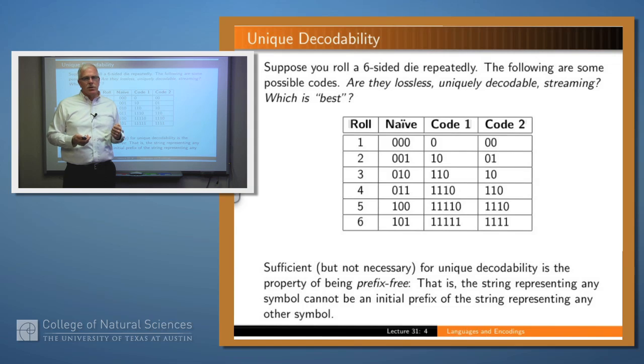A sufficient but not necessary condition for unique decodability is the property of being prefix-free. All three of these encodings are prefix-free. And what that means is that the encoding for any symbol is not an initial prefix of the encoding for any other symbol.